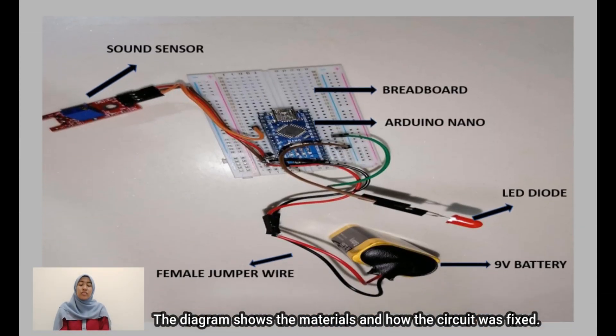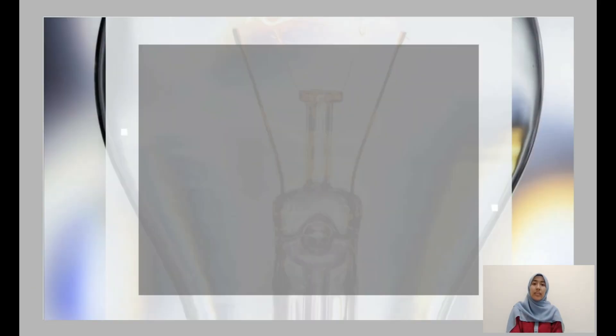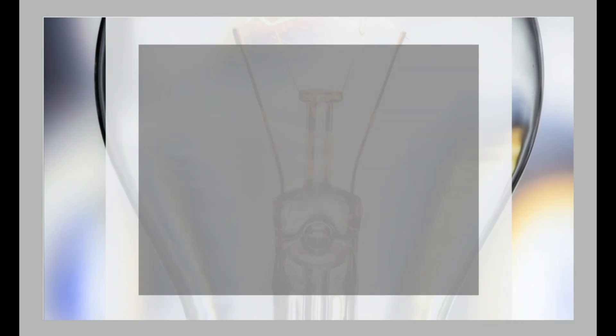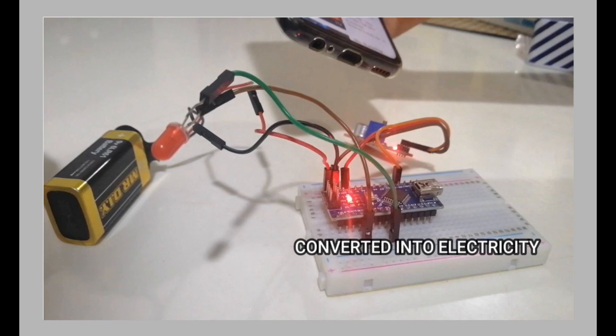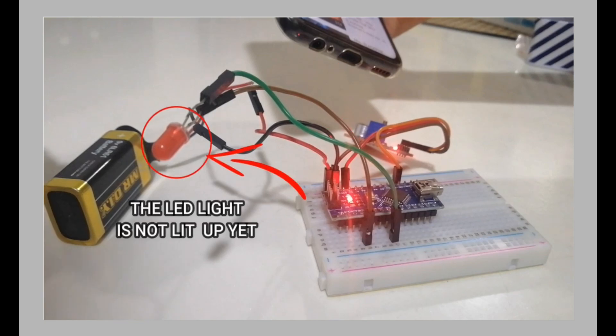The diagram shows the materials and how the circuit was fixed. Now, moving on, let us watch a short video about how the prototype works. Now we are using a phone which will produce sound wave. The sound wave will be converted into electrical energy which will light up the LED and also charge the phone.